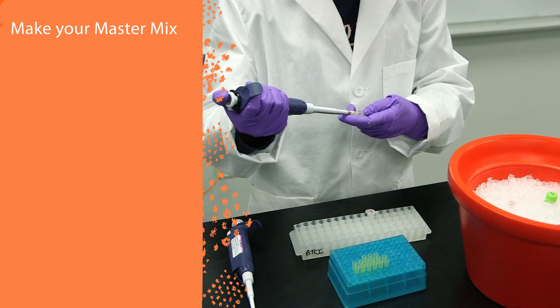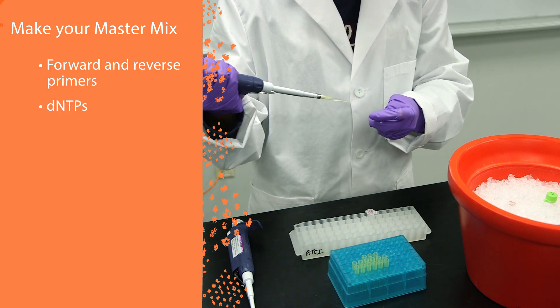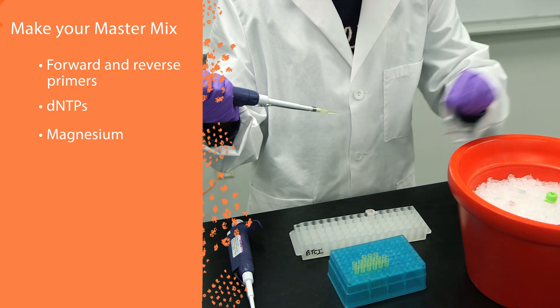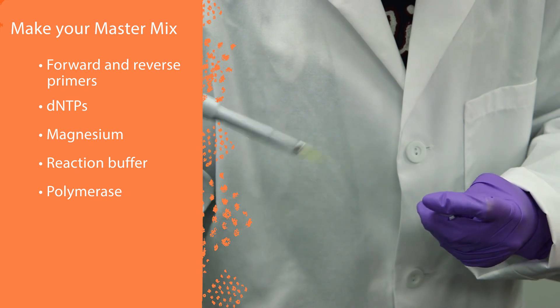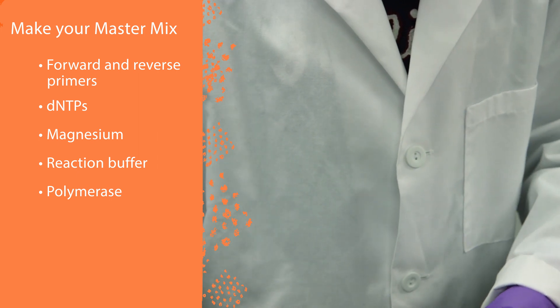Start by making a master mix of your forward and reverse primers, DNTPs, magnesium, reaction buffer, and polymerase. Keep the mix on ice until you're ready to dispense into the PCR tubes.